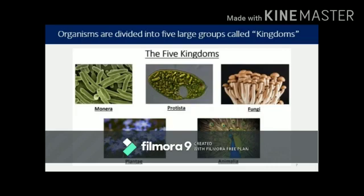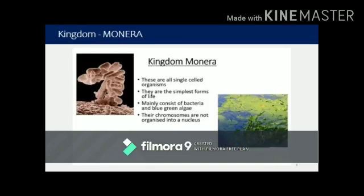Out of the five kingdoms, three you must be somewhat familiar with — especially the last two, Plantae and Animalia, which we have seen a lot. What you may not know are Monera and Protista. In Monera, we have put all the bacteria, blue-green algae, cyanobacteria, and microorganisms. In Protista, we have put all the protists which we will study more about. Then there is Fungi — you can see mushrooms — then Plantae where all plants are included, and Animalia where we all belong.